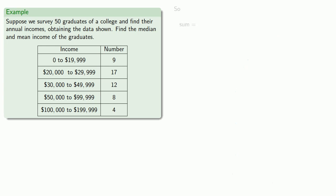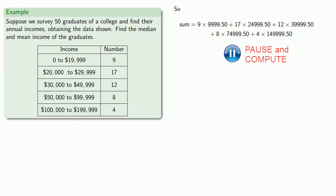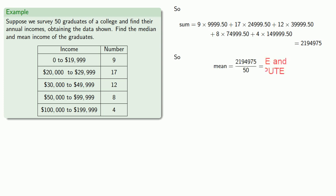So our sum of values, well there's nine at $9,999.50, seventeen at $24,999.50, twelve at $39,999.50, eight at $74,999.50, and four at $149,999.50, and that gives us a total income. And there's 50 incomes altogether, so our mean is going to be, and we could say that the mean income of the graduates is $43,899.50.